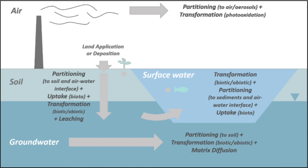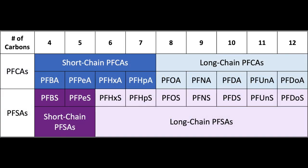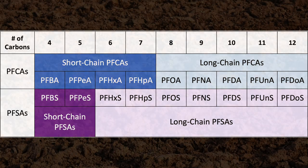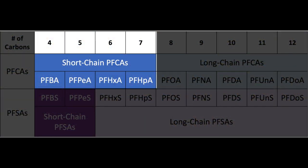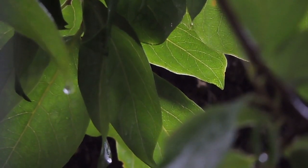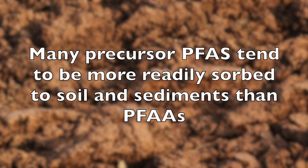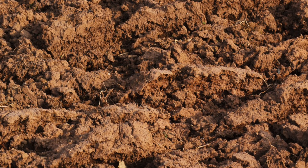These fate and transport processes allow us to make some very general predictions of where different PFAS are more likely to be found. Longer-chain and sulfonate PFAAs are often more abundant in soils and sediment and tend to bioaccumulate in animals. Shorter-chain and carboxylate PFAAs are often more abundant in water and tend to be taken up by plants. Some site data suggests that many of the precursor PFAS tend to be more readily absorbed to soil and sediment than PFAAs and may be more likely to remain in source areas where they can undergo transformation.